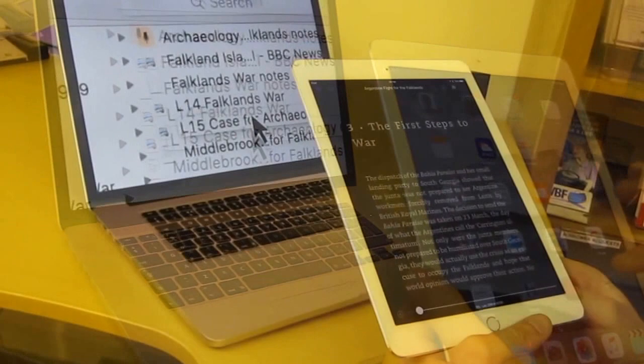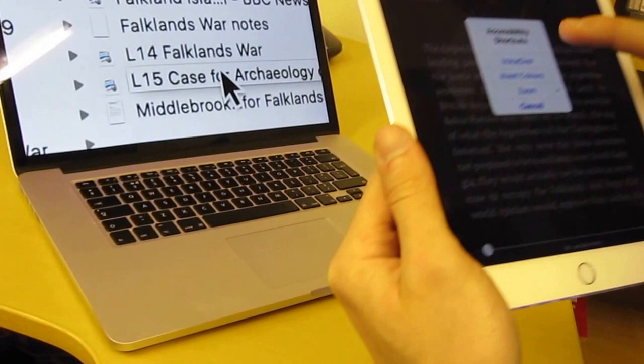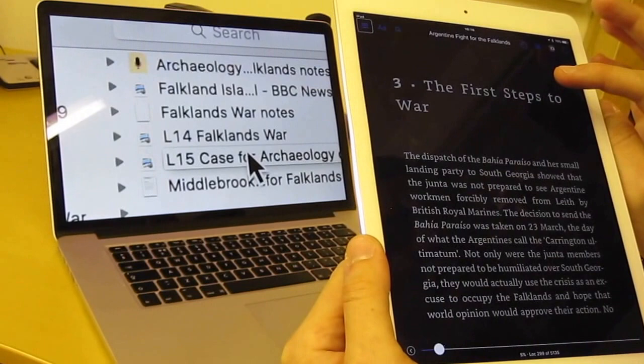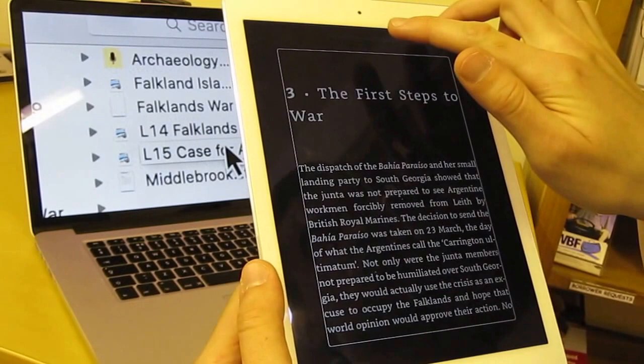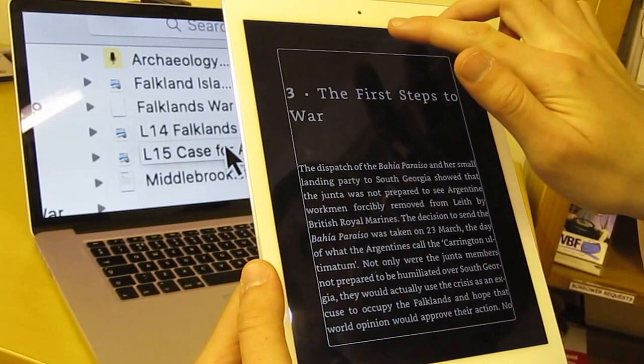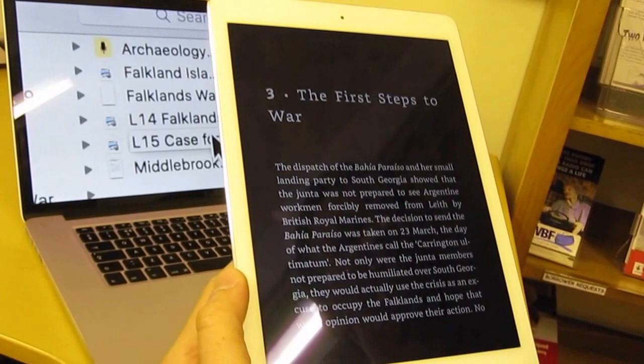So now we are going to use VoiceOver to read a little bit of this chapter. I have triple tapped to bring up my accessibility shortcut so I can choose one of the accessibility features. I will select VoiceOver. Now touch the screen in any place to have VoiceOver focus on it. So if I come down - Hey Argentine, fight for the Falklands. That is the book. Two fingers, swipe down and it will read this to us.